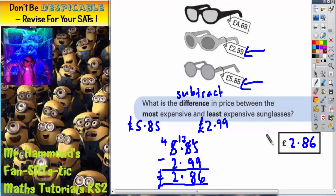As a check, what you could do is take your £2.99 and add the £2.86 back on and see if it gets you back to £5.85. Nine and six is 15, nine plus that one is ten, plus eight is 18.